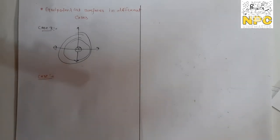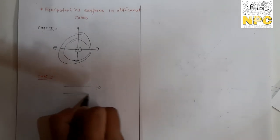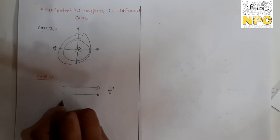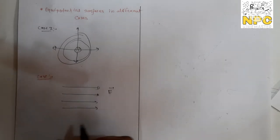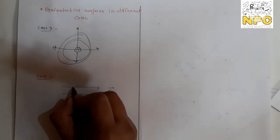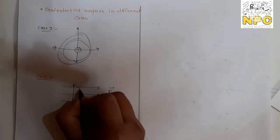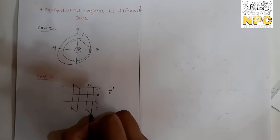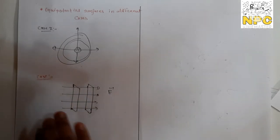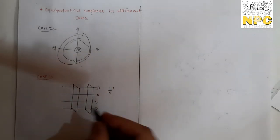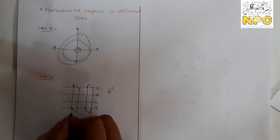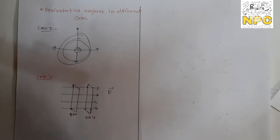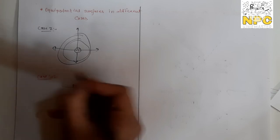Case 2: If the electric field is uniform — meaning equidistant, parallel field lines — then the equipotential surface is perpendicular to these field lines. It will appear as parallel planes perpendicular to the electric field. As you move along the field direction, the potential decreases — for example from 80 V to 60 V.